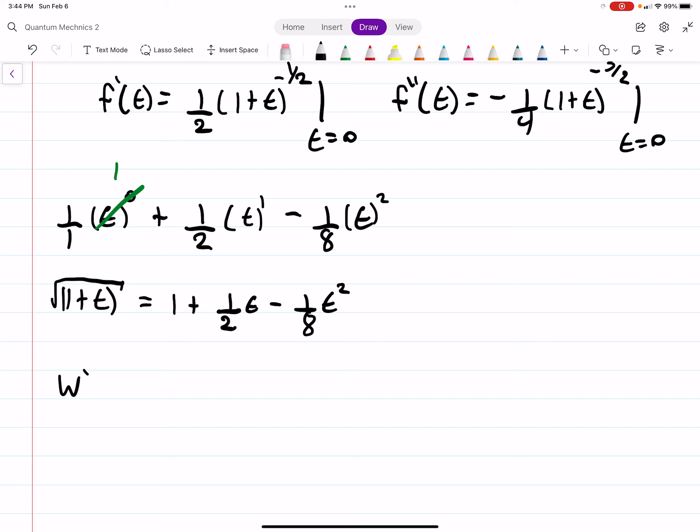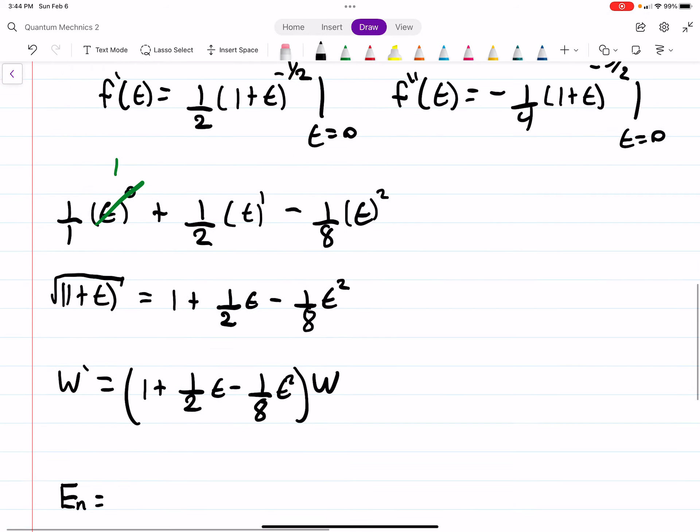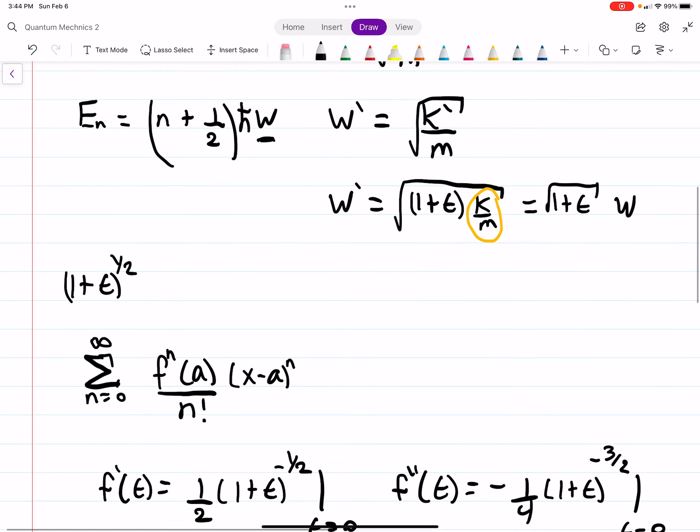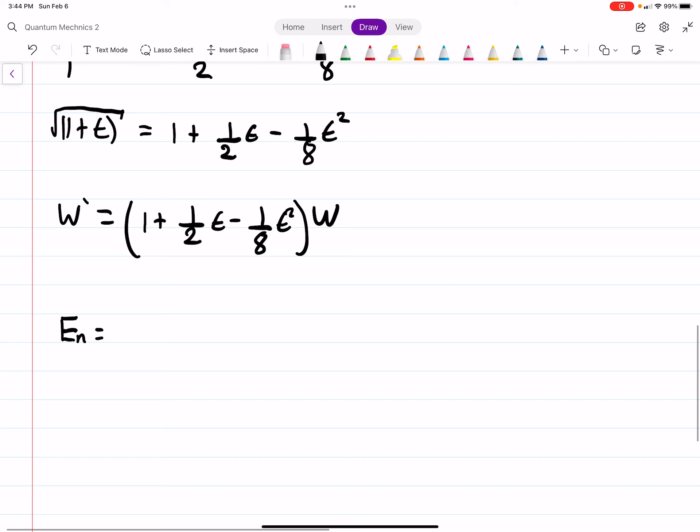So ω' equals this times the original omega, and then we can find our energy. Essentially, we're replacing omega with omega prime. So E_n' = (n + 1/2)[1 + (1/2)ε - (1/8)ε²]ℏω. That is your new energy and the answer to part A. Now part B.